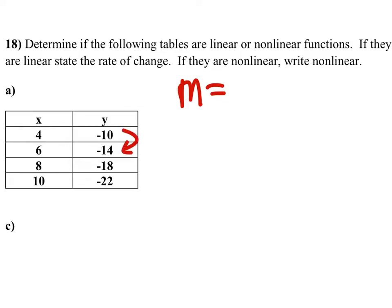So from negative 10 to negative 14, it went down 4. So we've got a negative 4 over. From 4 to 6, then we added 2.